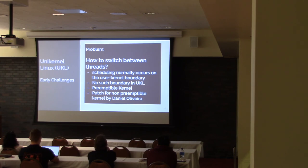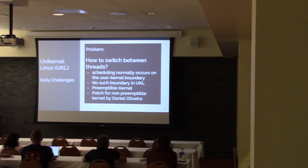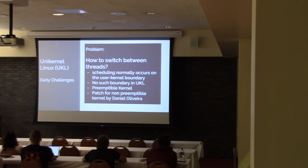Another issue: scheduling normally occurs at the user-kernel boundary. When you do a syscall, you give control to the kernel which does housekeeping tasks and may switch tasks. Since we don't have that boundary, pthreads were not being scheduled properly — if a thread runs, it just runs, as happens in a non-preemptible kernel. The solution was to use a preemptible kernel. Also, Daniel Olivera from Red Hat, who recently joined the team, wrote a patch that mimics this kernel-user boundary using the UKL library as a clean entry point into kernel code, so it now works for a non-preemptible kernel as well.